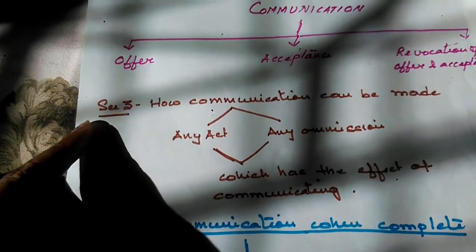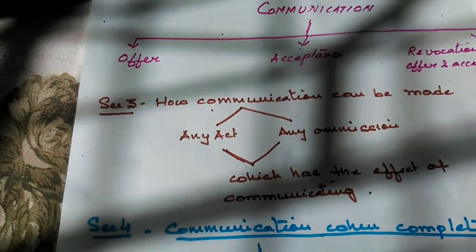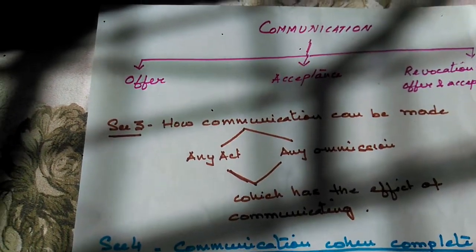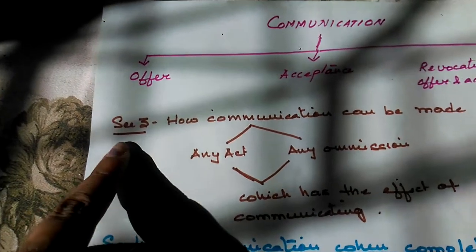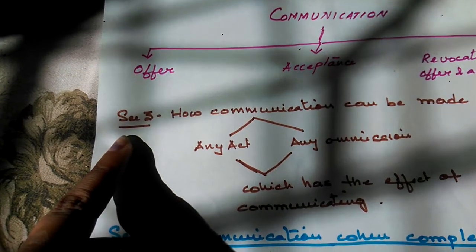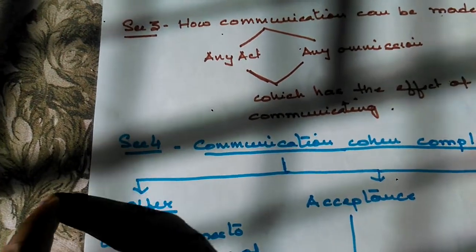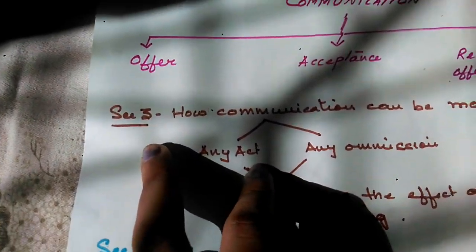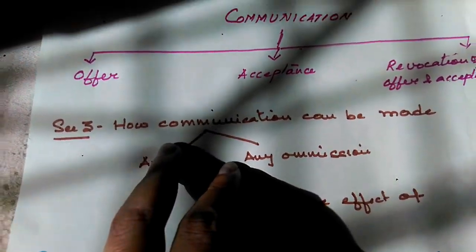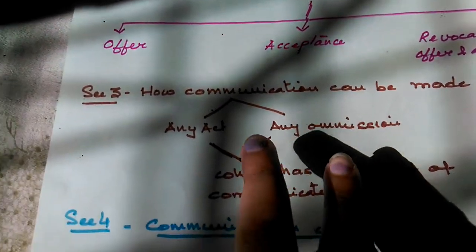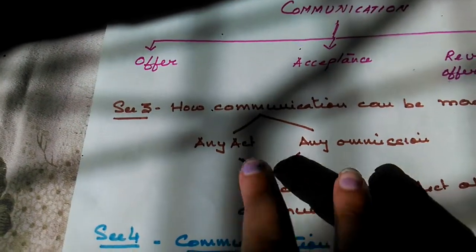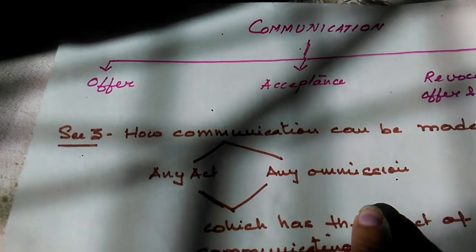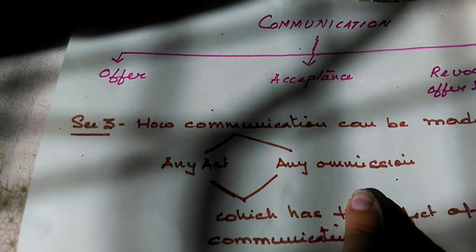The sections that deal with communication are Section 3 and Section 4 of the Indian Contract Act. Section 3 deals with how communication can be made. Communication can basically be made with any act or any omission by the party communicating.